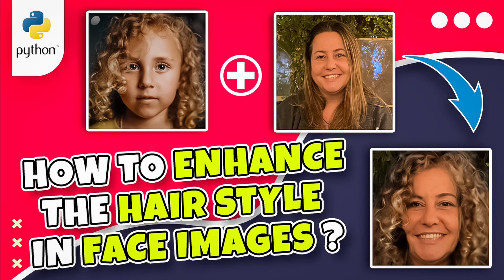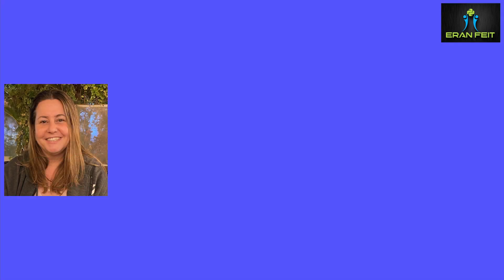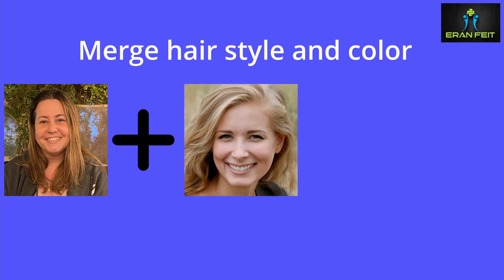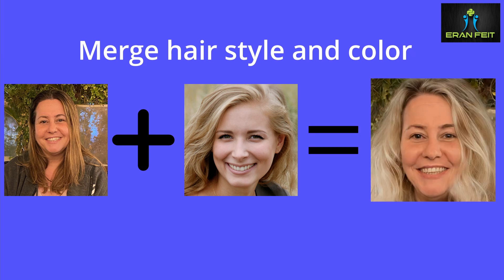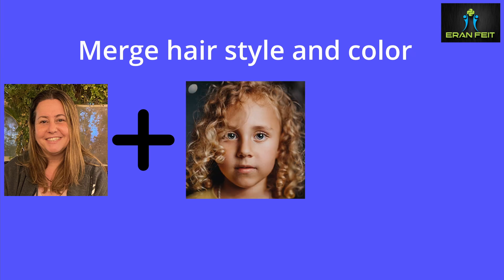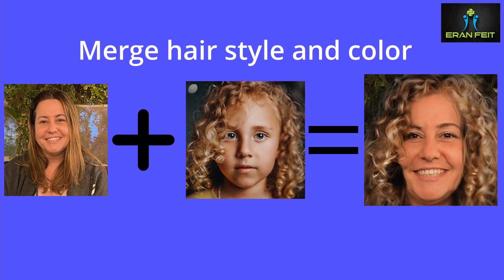In this tutorial we are going to take a closer look at a very nice Python library called Barbershop. Basically we take one image and choose another face image for hairstyle and color, and blend it all together to create a new image. We can also take two images — one for the styling of the hair and the next one for the color of the hair — and merge it all together.